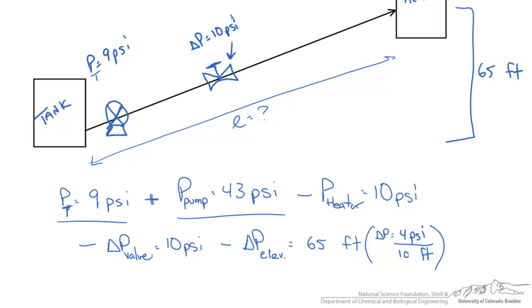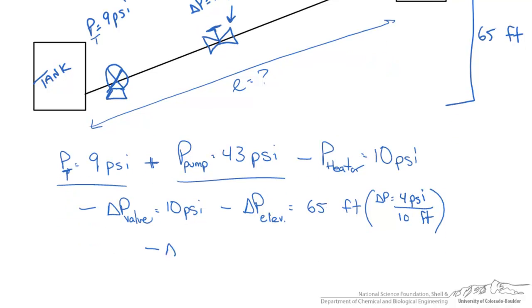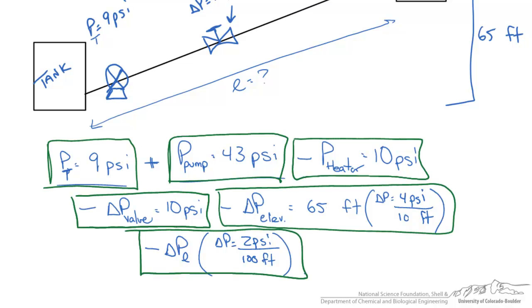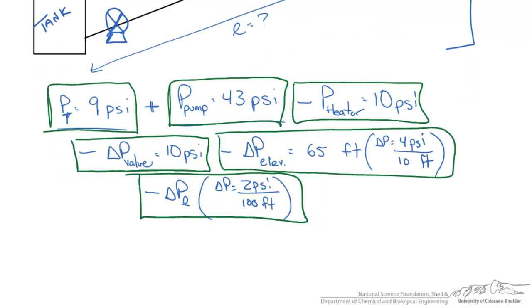Lastly, we're going to subtract our delta p of the length of the pipe, which also has a relationship: delta p is 2 psi per 100 feet of pipe.